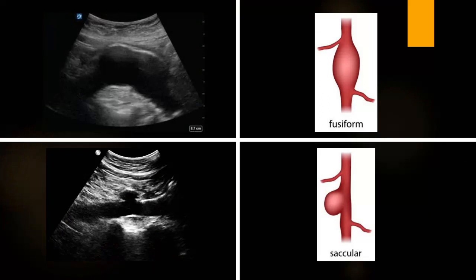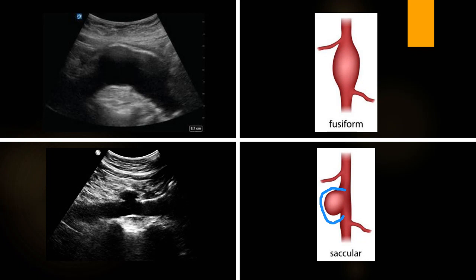Looking at fusiform versus saccular: the saccular in the diagram looks pretty worrisome — like a whitehead pimple ready to burst at any second. That's the same concept with the saccular aneurysm: it's very sensitive to any pressure change or blood force trauma to the abdomen. We really want to treat those patients properly. Fusiform, on the other hand, is still dilated and wider than it should be, but less likely to rupture — like a pimple brewing underneath the surface that isn't quite visible yet.